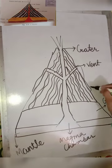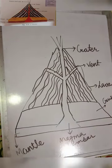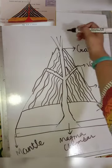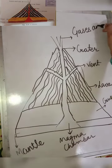There are more than 500 active volcanoes in the world. More than half of these volcanoes are part of the Ring of Fire, a region that encircles the Pacific Ocean.